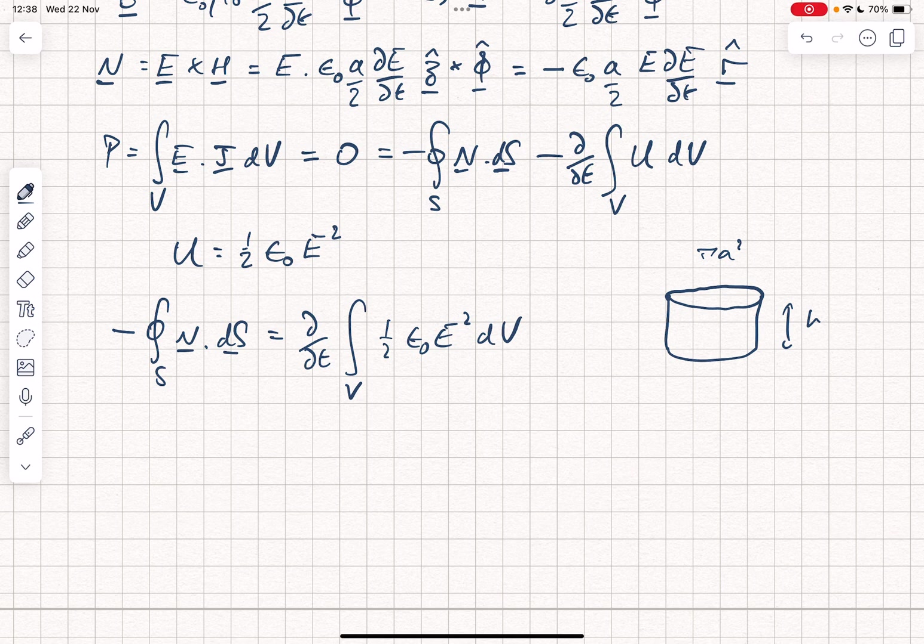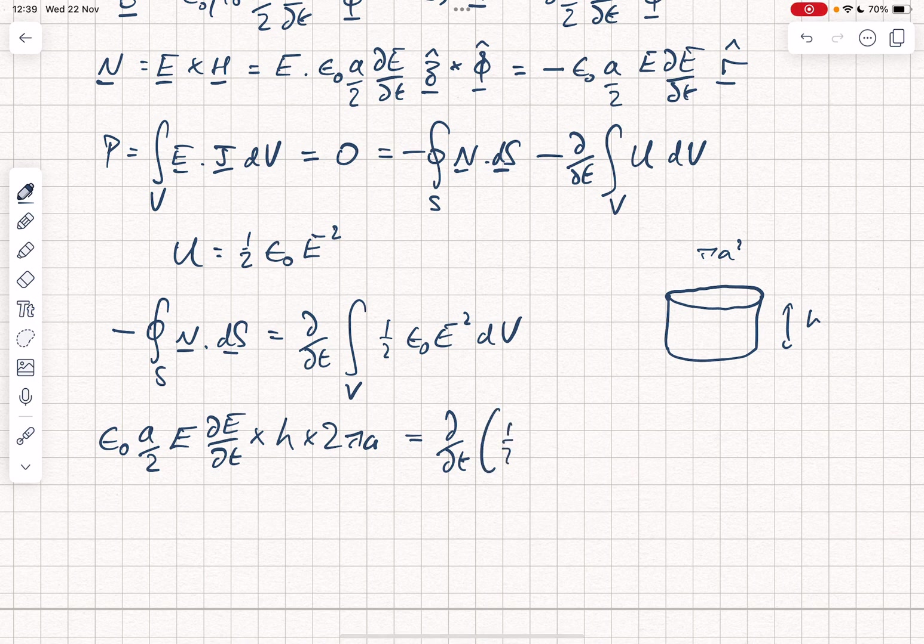So we find the following. We have epsilon naught A over 2 E dE by dt, that's the magnitude of the Poynting vector, the minus signs cancel. We multiply that by h times 2 pi A, that's the surface area. And that is equal to d by dt of a half epsilon naught E squared multiplied by the volume, which is pi A squared h.